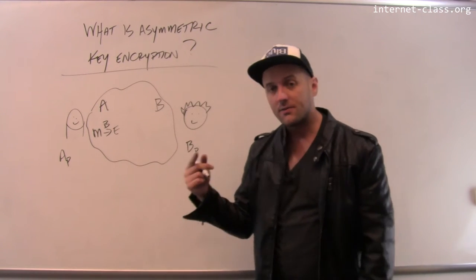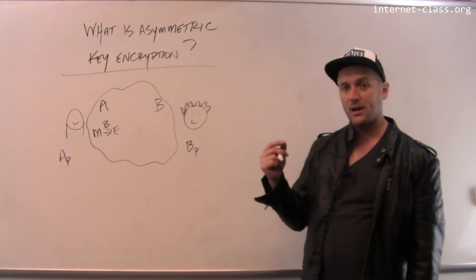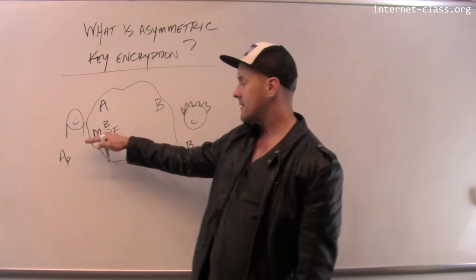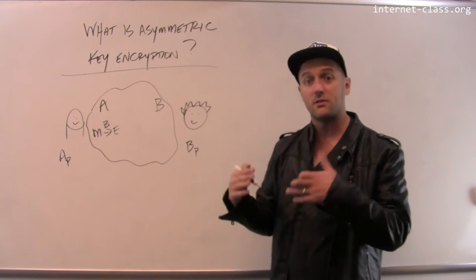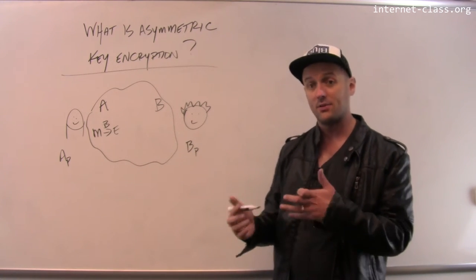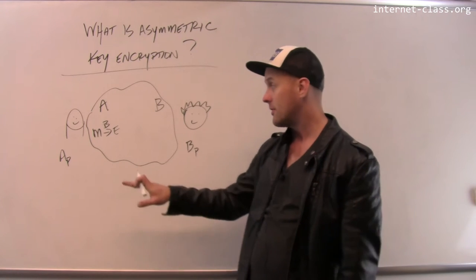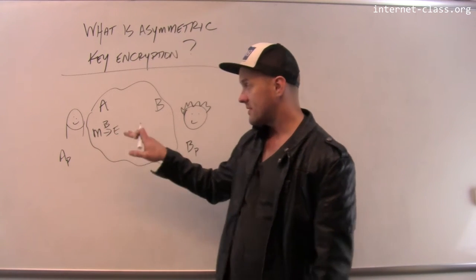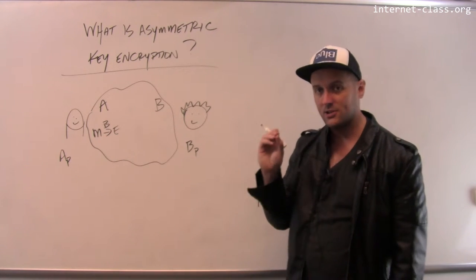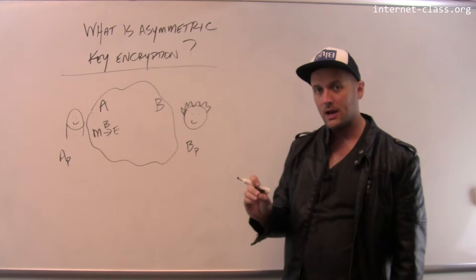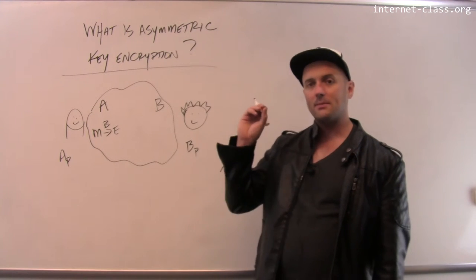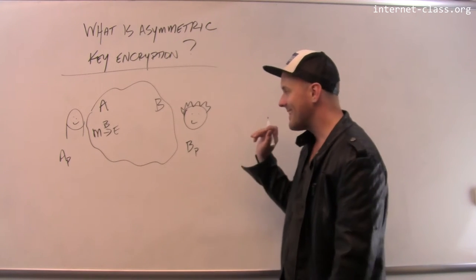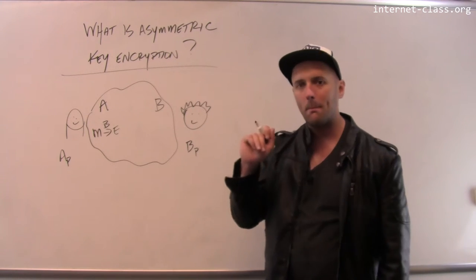Because of the existence of trapdoor functions, this encryption system is based on the idea of a trapdoor function. Alice can perform this encryption — it's an easy computation to perform — but it's impossible to undo unless you're Bob.